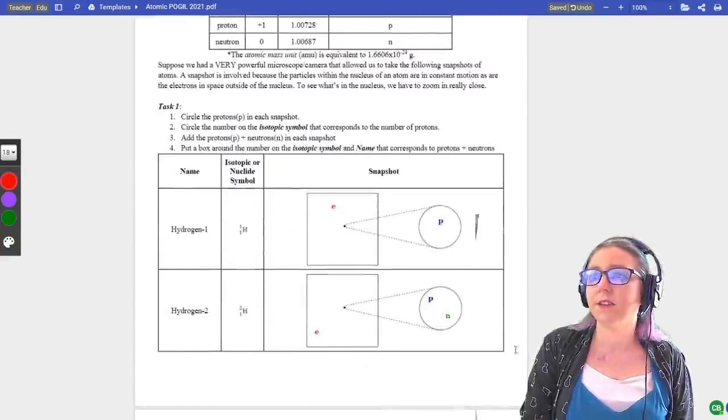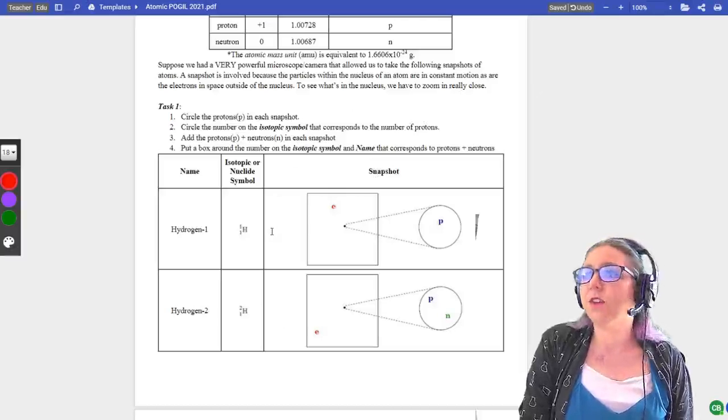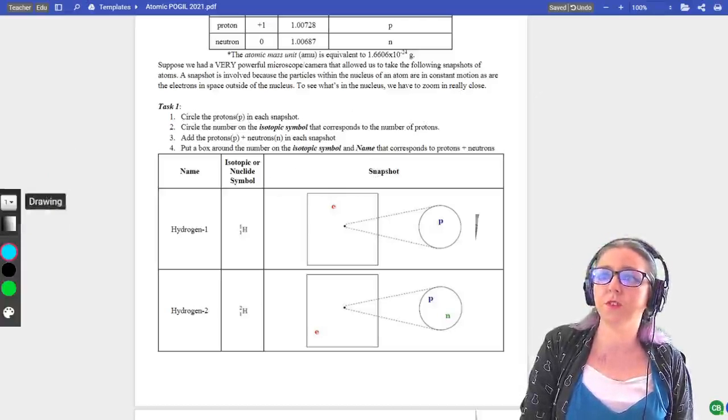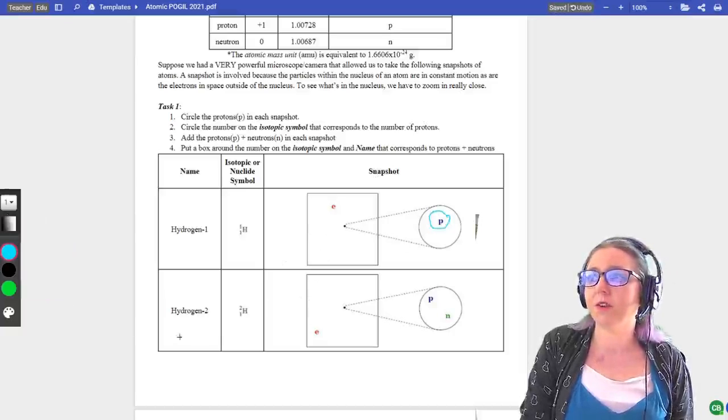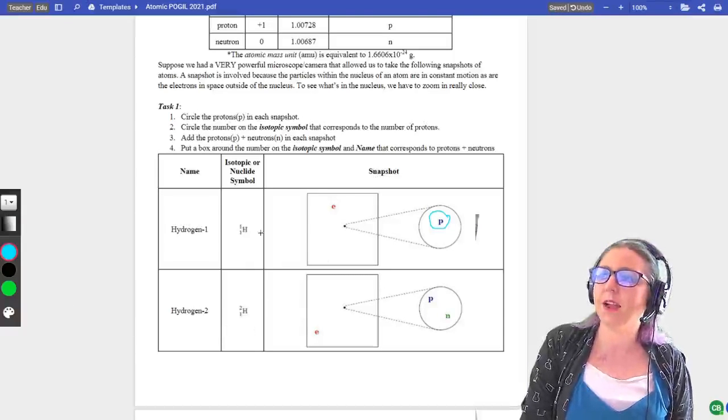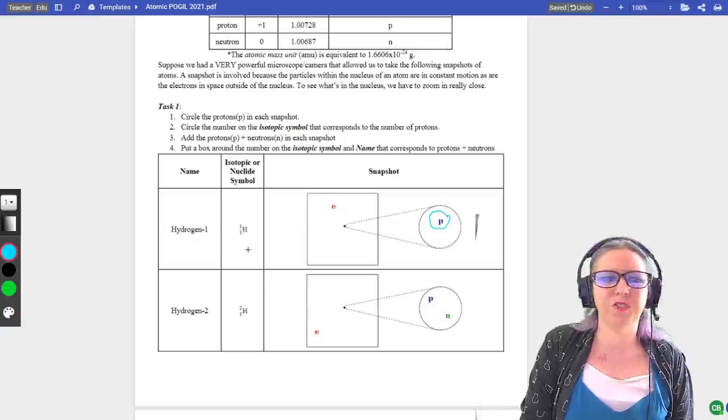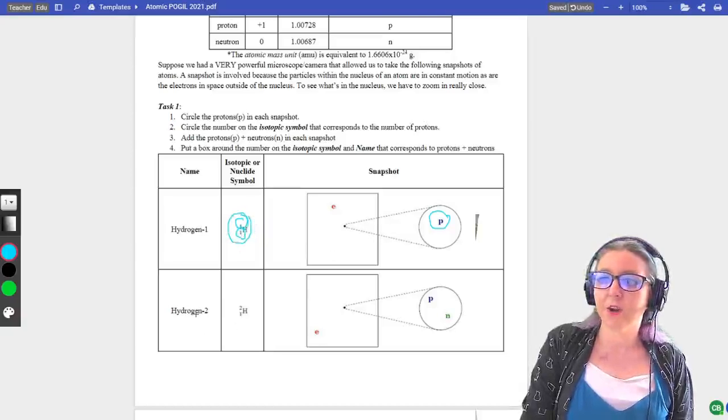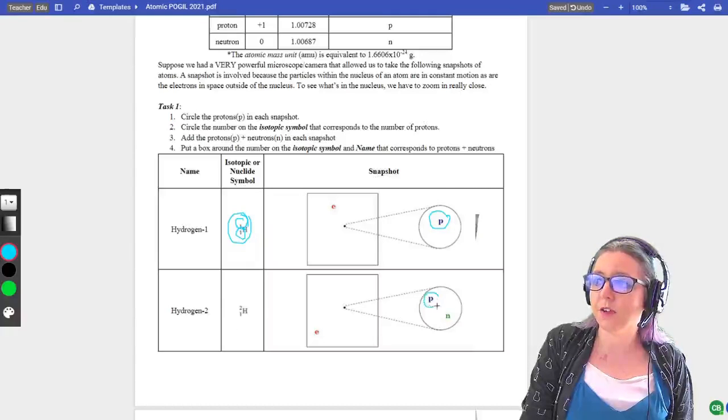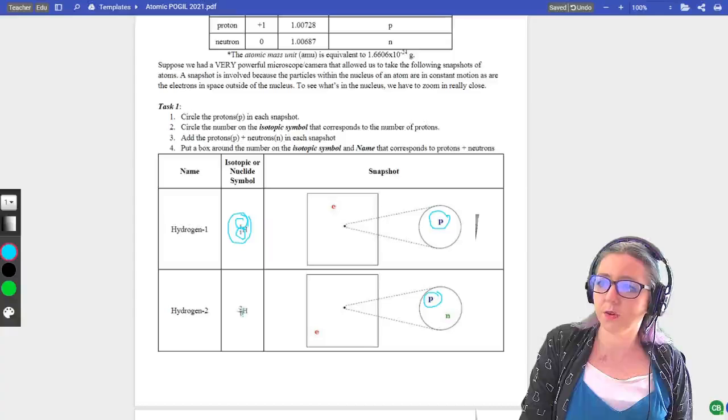A big hint to help you out with this POGIL is I would do hydrogen two before you do hydrogen one and just follow the instructions. Circle the protons so you can use the draw tool or the shape tool. Draw a circle around your proton and then draw the circle around the number that corresponds to the number of protons. This is why I think it's a little bit easier to start with hydrogen two because, see, I have one proton here, but I have two ones over there. So this trips students up, should you circle both? I think it's easier if you start with hydrogen two. I circle my proton. I have one proton. If I come over to my nucleotide symbol, oh, hey, look, there's only one number one here.